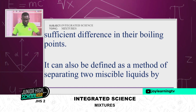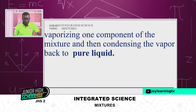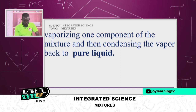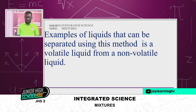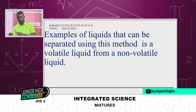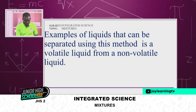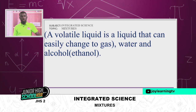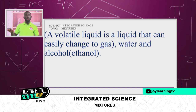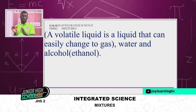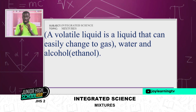Simple distillation can also be defined as the method of separating two miscible liquids by vaporizing one component of the mixture and then condensing the vapor back to pure liquid. Examples of liquids that can be separated using this method: a volatile liquid from a non-volatile liquid. A volatile liquid is a liquid that can easily change to gas — it has a very low boiling point. We have water and ethanol or alcohol.